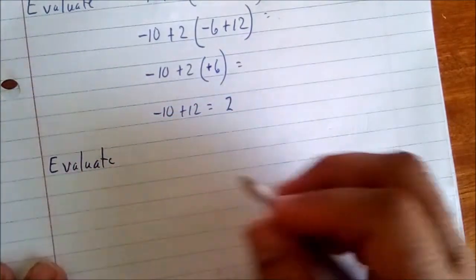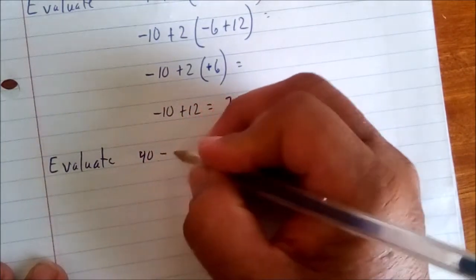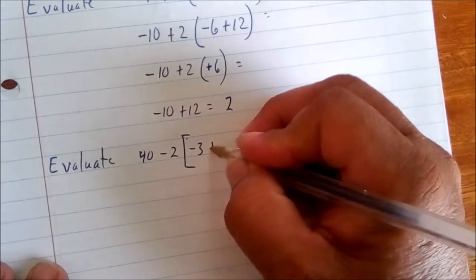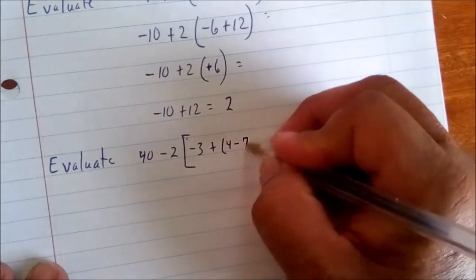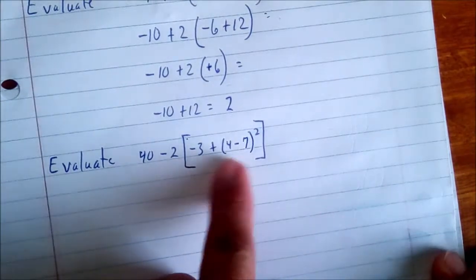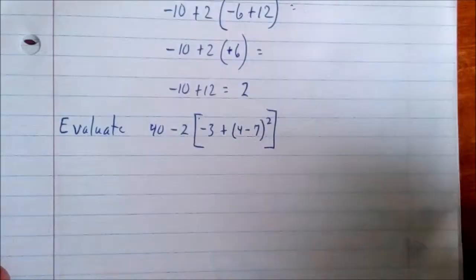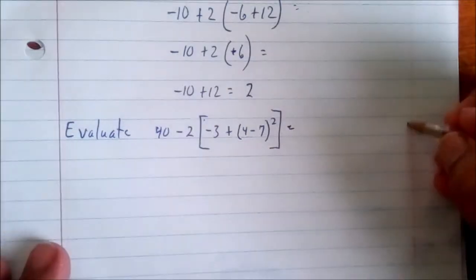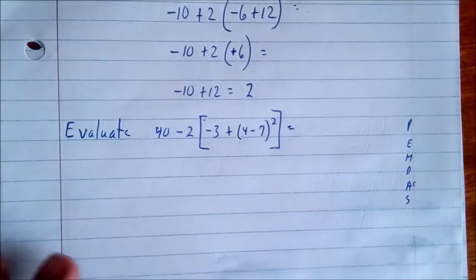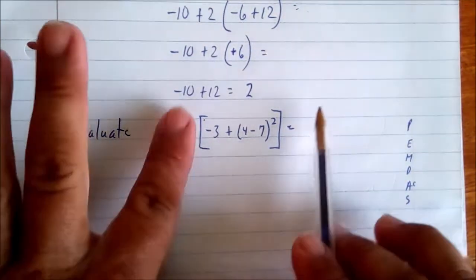Evaluate: 40 minus 2, brackets, negative 3 plus, parenthesis, 4 minus 7, close parenthesis, squared, close brackets. Parentheses and brackets are the same concept. Recall PEMDAS. We have parentheses within brackets, so we need to work the innermost parenthesis first.